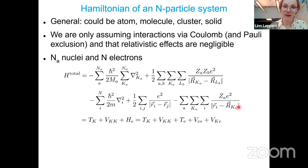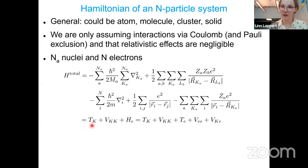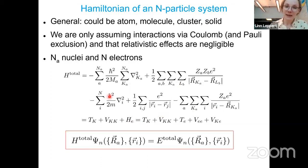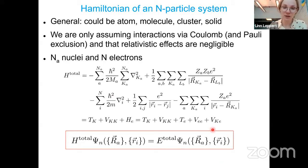We can shorten this by writing it as the sum of the kinetic energy of the nuclei — the K is for the German word for nuclei, from a lecture I gave in Germany — the interaction of nuclei with each other, and then the electronic Hamiltonian. To solve this, in principle the only thing we need to do is solve the Schrödinger equation for the stationary state.